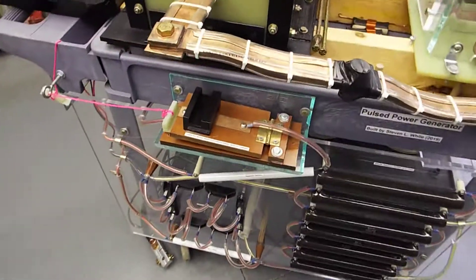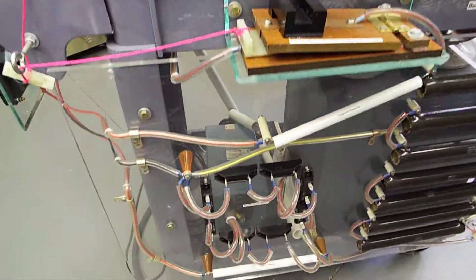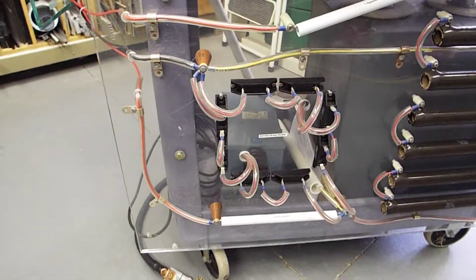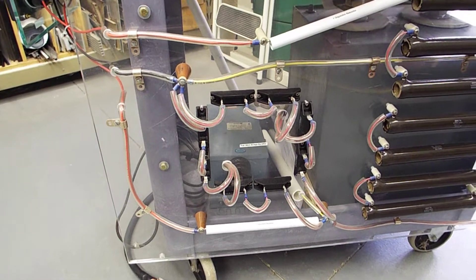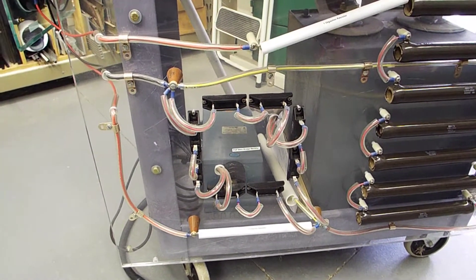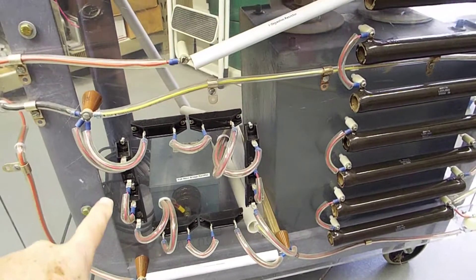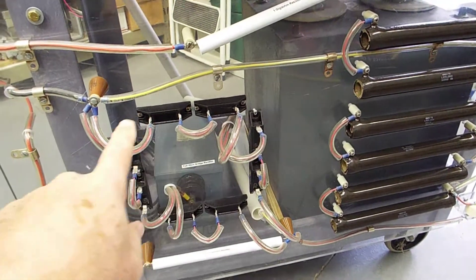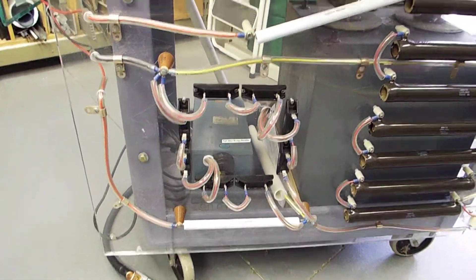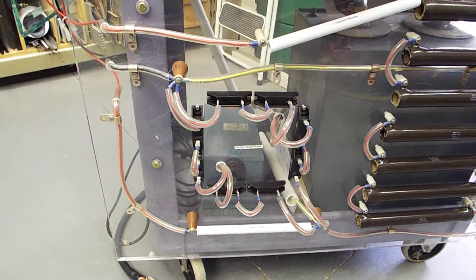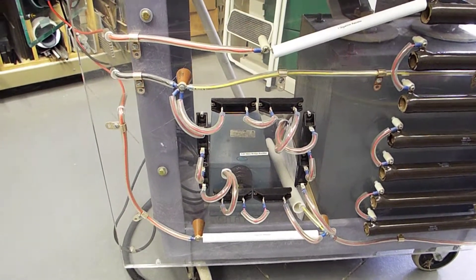I guess the other thing I mentioned, this down here, this is the full wave bridge rectifier, which looks like a square. It's high voltage diodes. It takes the output of the neon sine transformer and it converts it to DC to charge the capacitor.